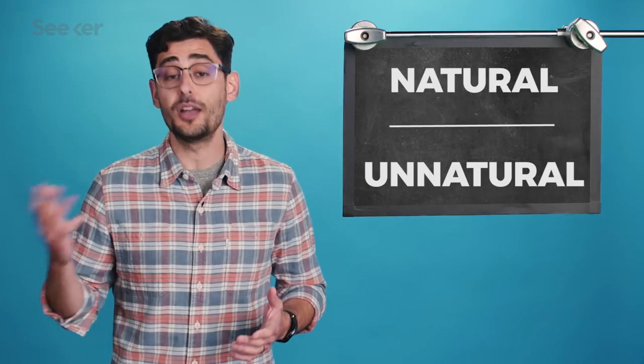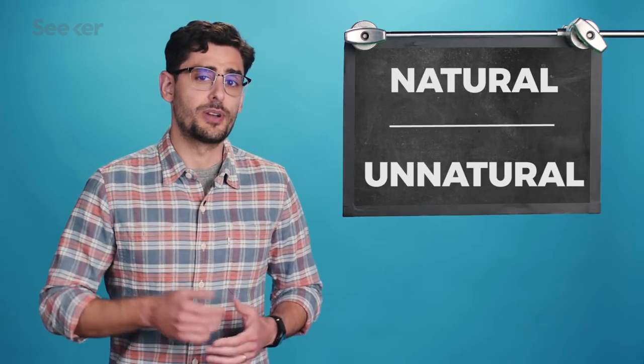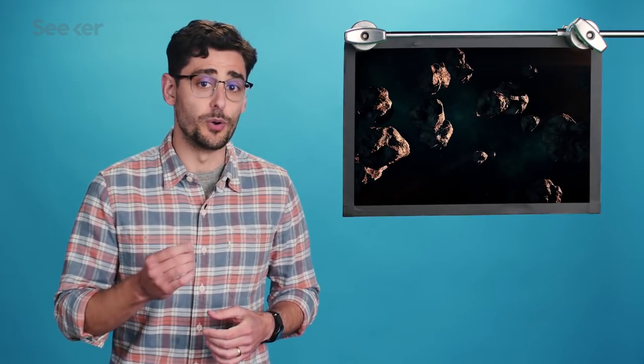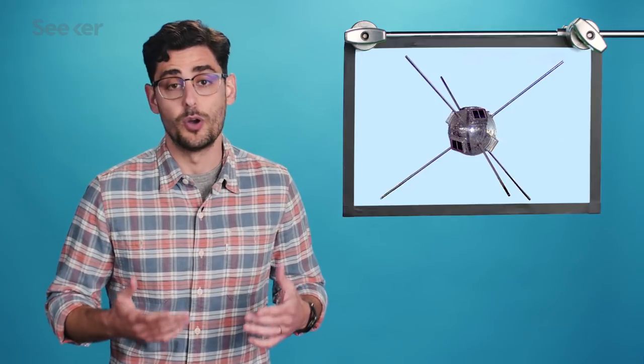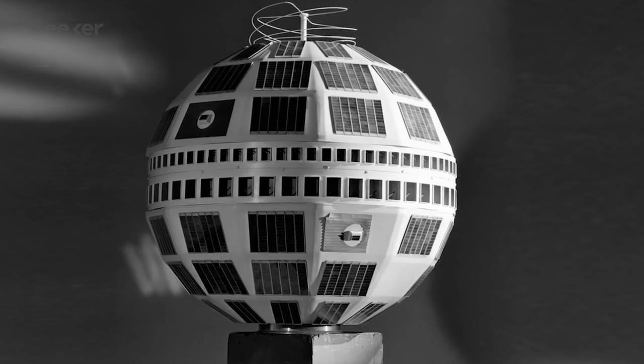Well, first you might be wondering, what the heck is space junk? There are actually a couple of types: natural and unnatural kinds. The natural kind mostly refers to small meteors that orbit the Sun. The unnatural kind, also known as orbital debris, includes any man-made object orbiting Earth that no longer serves a useful function. This includes pieces of non-functional spacecraft, old rockets, retired satellites, some dude in a car, stuff like that.